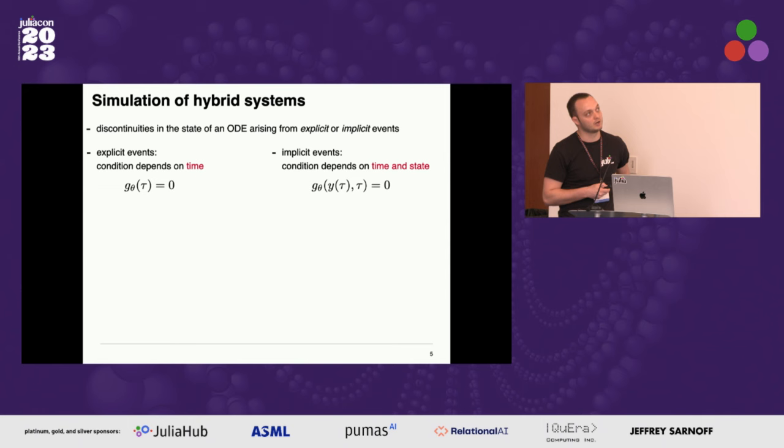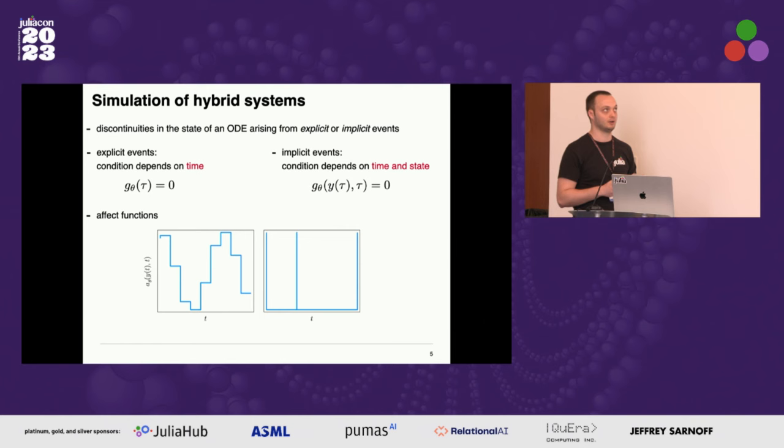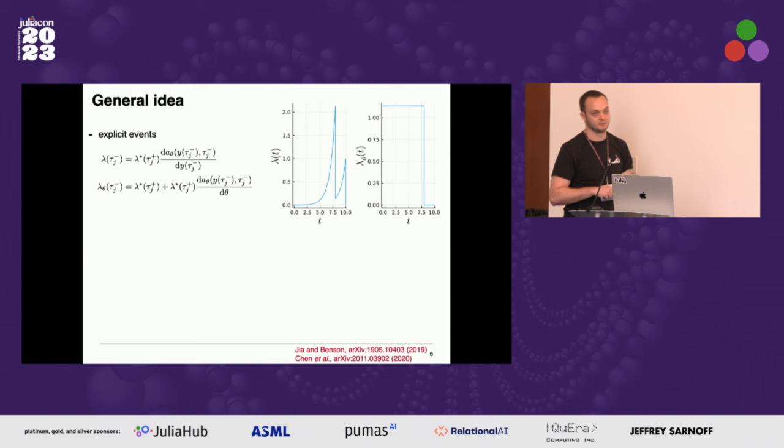The more general type are implicit events, where the event condition depends not only on time but also on the solution of your differential equation. There's two examples for what can happen at these condition functions: a piecewise constant controller that's only updated at specific time points, or depending on some concentration in your system, some bursts or spikes.